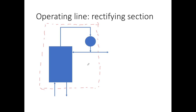Let's define some symbols. The top product is called D and its mole fraction is XD. The reflux line, which funnels some of the top product back into the column, is denoted LD with mole fraction XD as well, since the composition of both parts is the same. The vapor line coming up from below is VN+1 with mole fraction YN+1, and the liquid flowing down is LN with mole fraction XN.